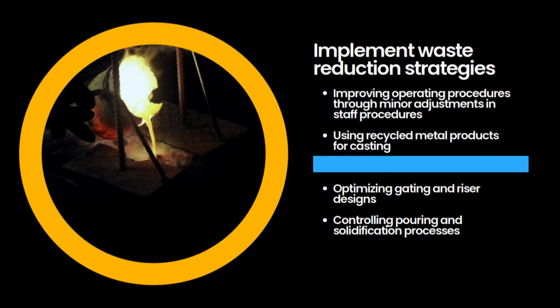One aspect is the utilization of used sand-based molds as byproducts, which can be repurposed for making bricks, concrete, and backfill for buildings. Improving operating procedures through minor adjustments in staff procedures, inventory control, waste segregation, and preventive maintenance can lead to significant waste reductions without relying heavily on technology or materials advancements. Using recycled metal products for casting is more energy and resource efficient compared to using new metals — recycled content castings require 95% less energy, reducing the strain on energy resources during raw material processing. Optimizing gating and riser designs helps minimize the need for extra material and reduces scrap, resulting in energy savings. Properly engineered gating systems ensure smooth metal flow, lower turbulence, and minimize casting flaws, thereby reducing the requirement for rework or scrap.